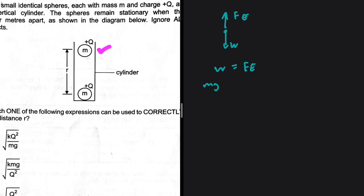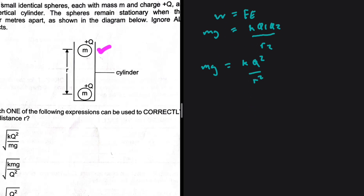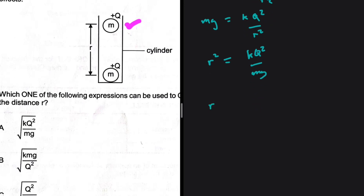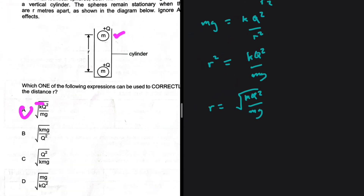So weight equals electrostatic force: mg = kq²/r². Solving for r²: r² = kq²/mg. Taking the square root of both sides: r = √(kq²/mg). That is option A, the answer to 1.7.